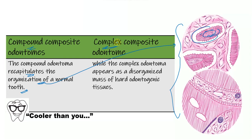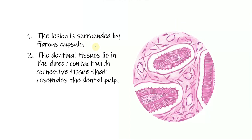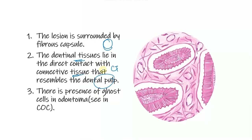The complex, on the other hand, is just a disorganized mass of hard tissue. You have scattered enamel spaces, dentine scattered everywhere, cementum, and pulp — it appears as a disorganized mass, while compound more closely resembles a tooth. The entire lesion is surrounded by a fibrous capsule, and the dentinal tissues lie in direct contact with connective tissue resembling the dental pulp. There is often also the presence of ghost cells, as seen in the calcifying odontogenic cyst.